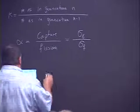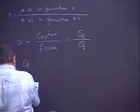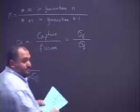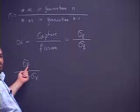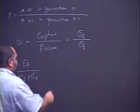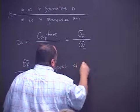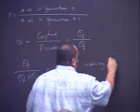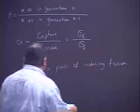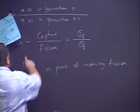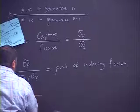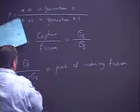We can represent σ_f / (σ_f + σ_γ) as the probability that a neutron will induce fission. Multiplying numerator and denominator by N·φ, the numerator gives the total number of fissions and the denominator gives total interactions — fission plus absorption. So this is the probability of inducing fission. Rewriting in terms of alpha by dividing numerator and denominator by σ_f gives 1 / (1 + α).